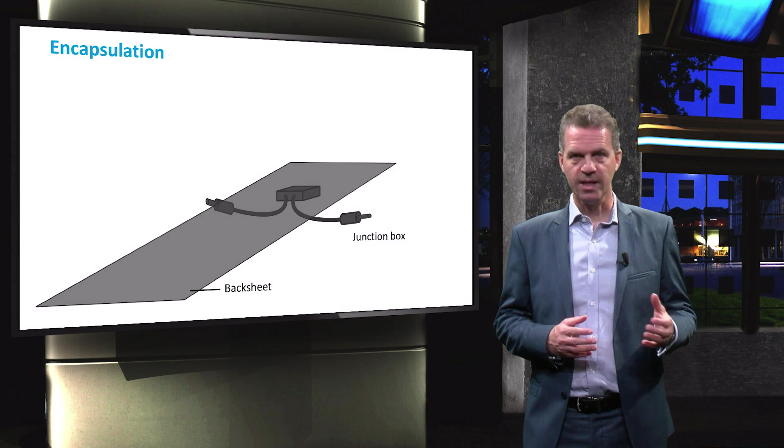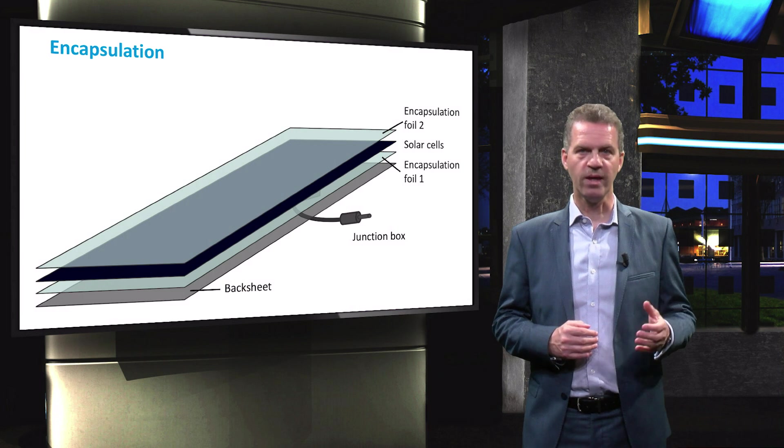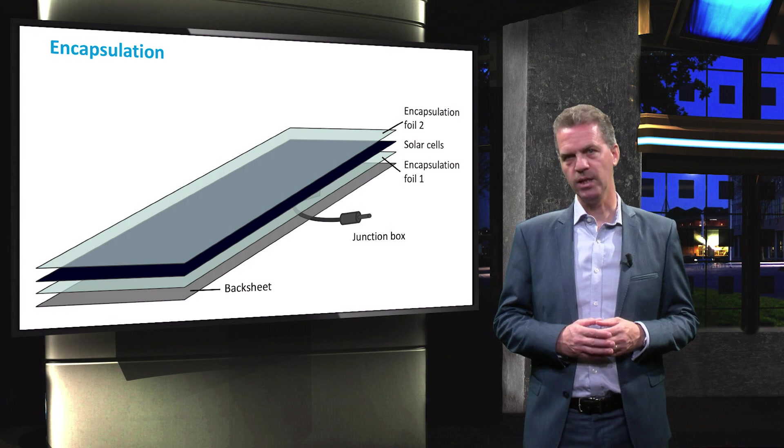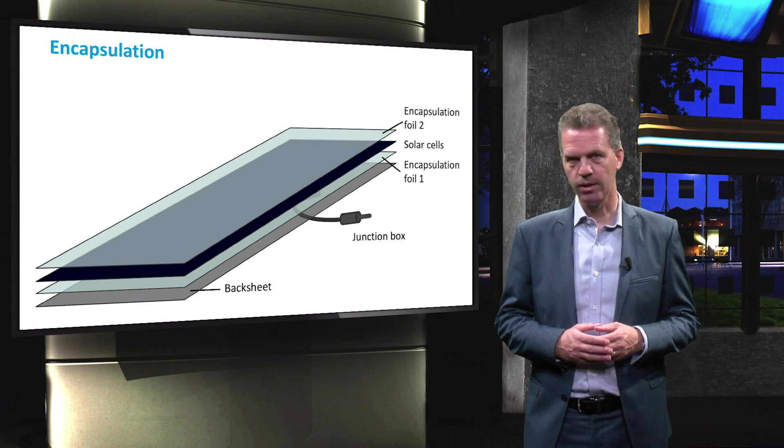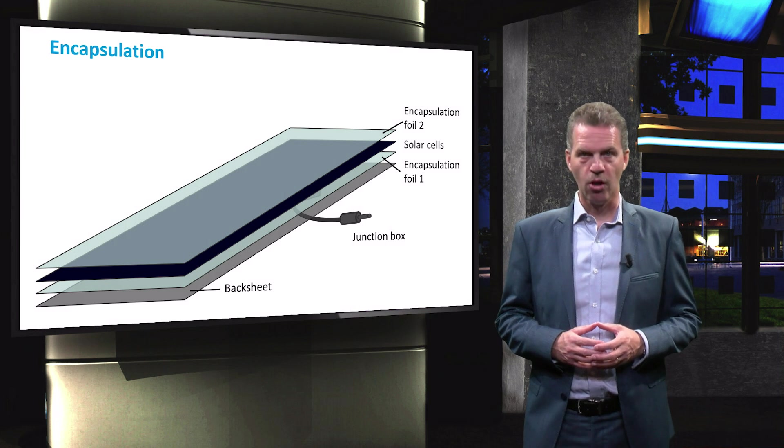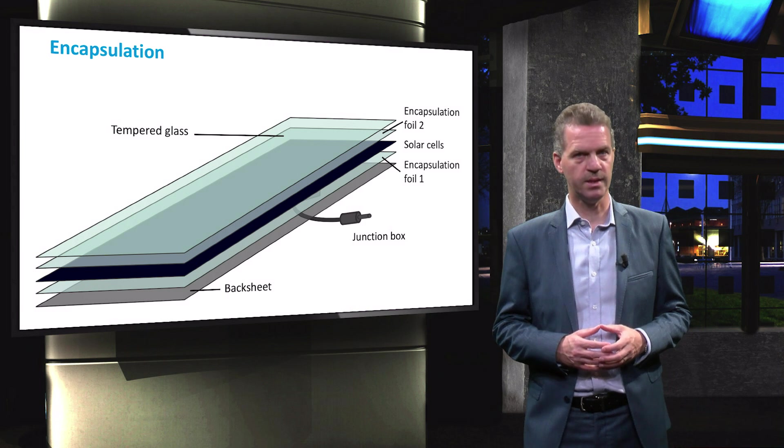The solar cells itself are laminated between two layers of encapsulation foil to prevent air and moisture ingress. The most common encapsulation material is ethylene vinyl acetate or EVA. The front surface of the module is protected with a sheet of tempered glass to make the module impact resistant.